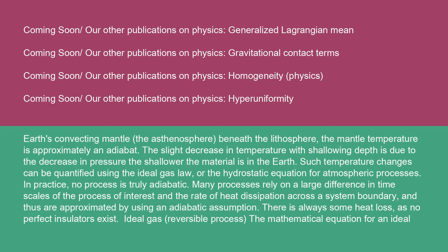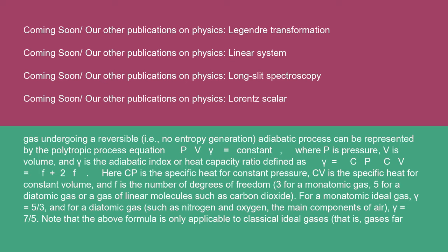For an ideal gas undergoing a reversible (no entropy generation) adiabatic process, the mathematical equation can be represented by the polytropic process equation PVγ = constant, where P is pressure, V is volume, and γ is the adiabatic index or heat capacity ratio, defined as γ = Cp/Cv = (F+2)/F. Here Cp is the specific heat for constant pressure, Cv is the specific heat for constant volume, and F is the number of degrees of freedom: three for a monatomic gas, five for a diatomic gas or a gas of linear molecules such as carbon dioxide. For a monatomic ideal gas, γ = 5/3, and for a diatomic gas such as nitrogen and oxygen (the main components of air), γ = 7/5.